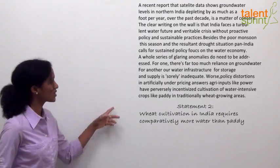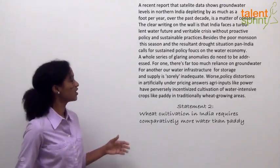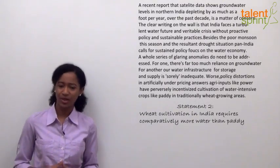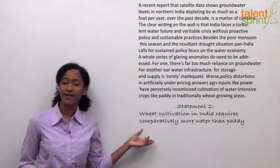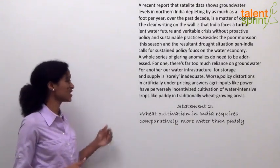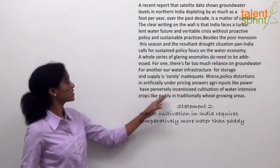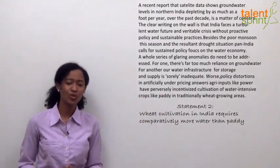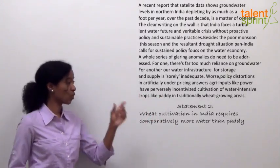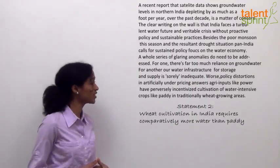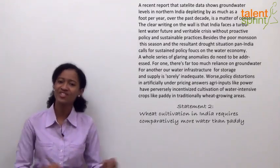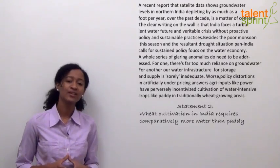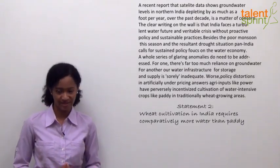Statement 2 reads: 'Wheat cultivation in India requires comparatively more water than paddy.' This completely contradicts the passage. The last line clearly says power has perversely incentivized cultivation of water-intensive crops like paddy in traditionally wheat-growing areas — meaning paddy requires more water, not wheat. Since this statement contradicts the facts in the passage, it falls under option 5 — definitely false.